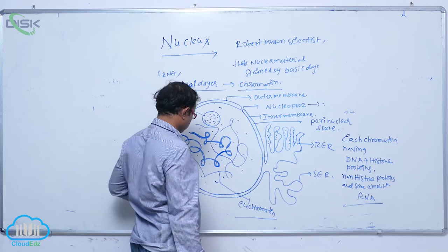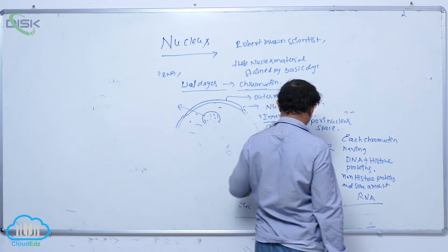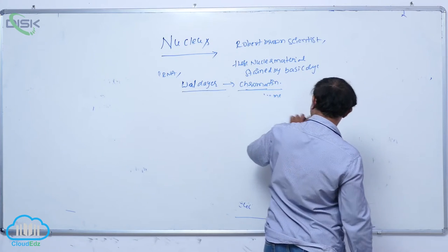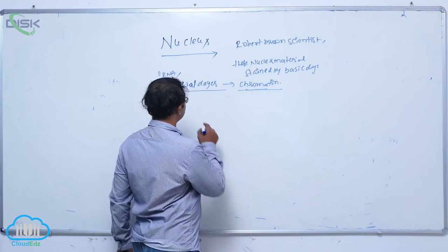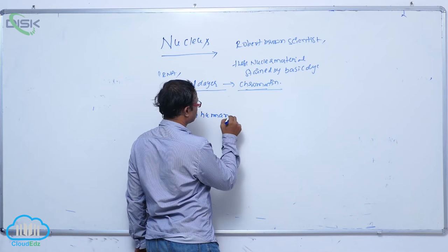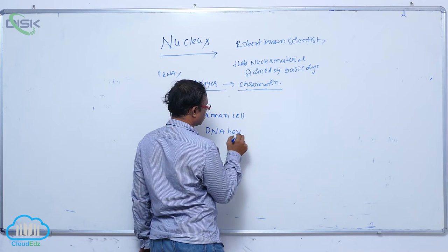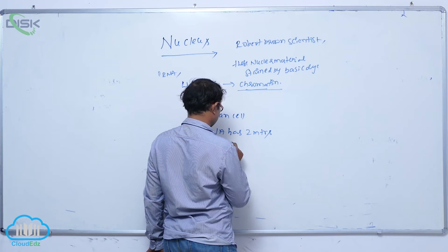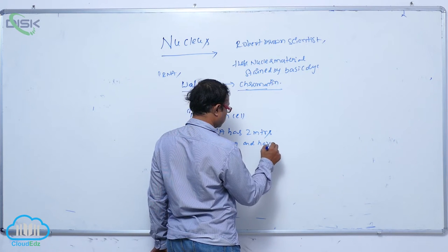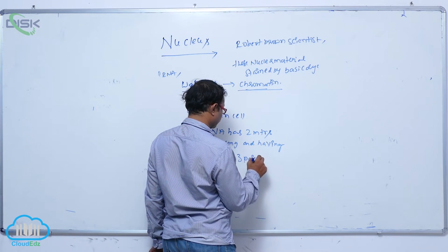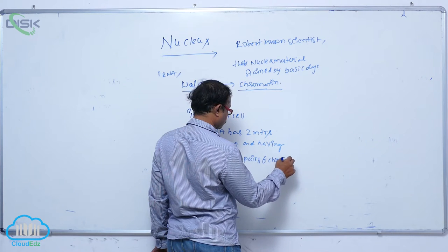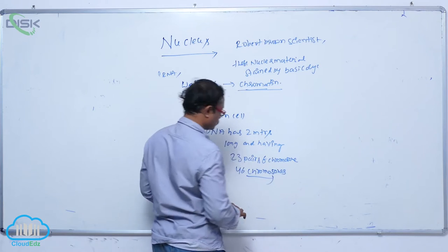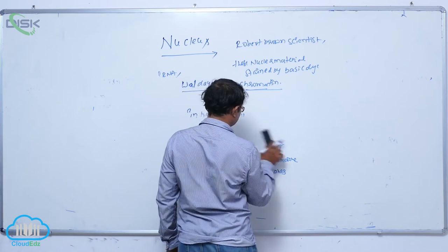Chromatin fibers coil and condense to form chromosomes. In human cells, DNA is two meters long and organized into 23 pairs of chromosomes, meaning 46 chromosomes in total, all contained within the nucleus.